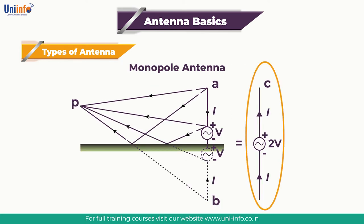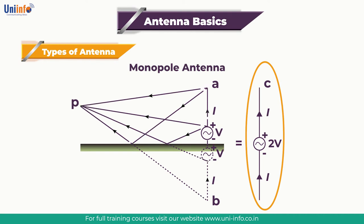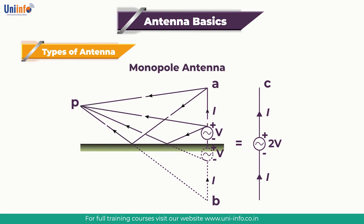A monopole antenna is a class of radio antenna consisting of a straight rod-shaped conductor, often mounted perpendicularly over a conductive surface called a ground plane. The driving signal from the transmitter is applied — or for receiving antennas, the output signal to the receiver is taken — between the lower end of the monopole and the ground plane. One side of the antenna feed line is attached to the lower end of the monopole and the other side to the ground plane, which is often the earth. This contrasts with a dipole antenna, which consists of two identical rod conductors with a signal applied between the two halves.